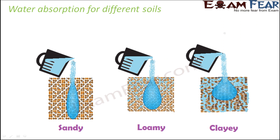Looking at water absorption for different soils: in case of sandy soil, the percolation rate is high but water absorption is less — in fact, the least of all. For loamy soil, wherever there are spaces, some water is actually locked and retained there. In the case of clayey soil, you can see a lot of water being retained. So clayey soil has the maximum water retention.